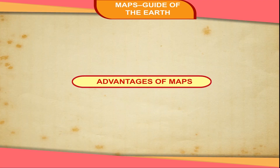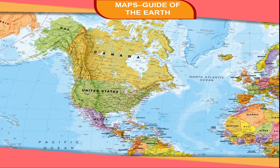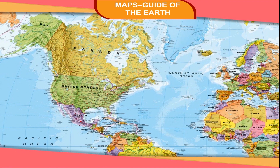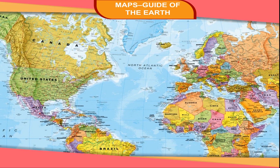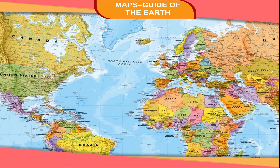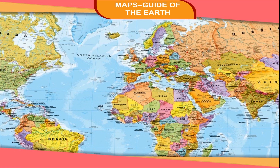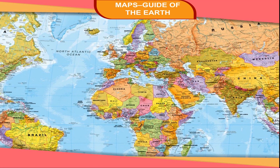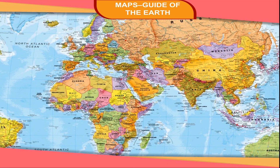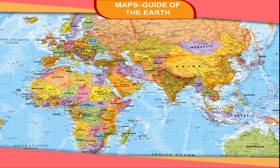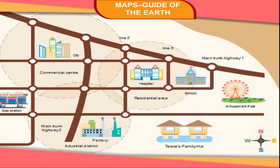Maps are very useful tools to study the Earth. We can see the whole world at a time on a map. Maps can show various places of the world in great detail. Maps can even show a very small area like a city with a lot of information. You can draw your school map providing its details. One can easily fold or roll a map and carry it.